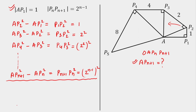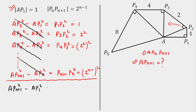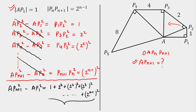Adding all these equations gives a telescoping series — AP2², AP3², etc. cancel alternately, leaving AP(n+1)² − AP1². Since AP1 = 1, the right side becomes 1 + 2² + (2²)² + (2³)² + … + (2^(n−1))². This is a geometric progression with first term 1 and common ratio 2² = 4, since the terms are 1, 4, 16, 64, and so on.